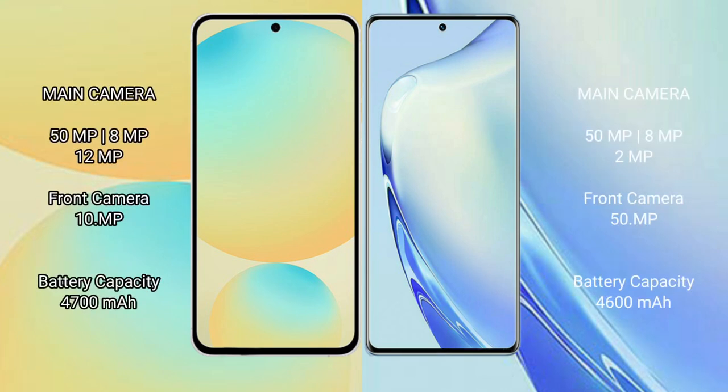Samsung Galaxy S24 FE has a rear triple camera setup of 50MP plus 8MP plus 12MP, and a 10MP front camera. vivo V27 has a rear triple camera setup of 50MP plus 8MP plus 2MP, and a 50MP front camera.